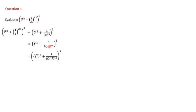Plus, i^24 can also be split as (i²)^12. So we have (i²)^9 + 1 divided by [(i²)^12 × i], the whole cube. We are doing the calculation inside the bracket only and have not yet touched the external cube power.